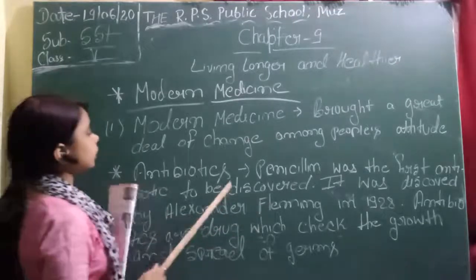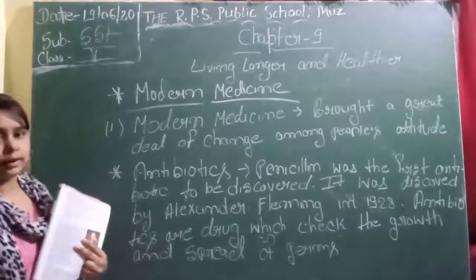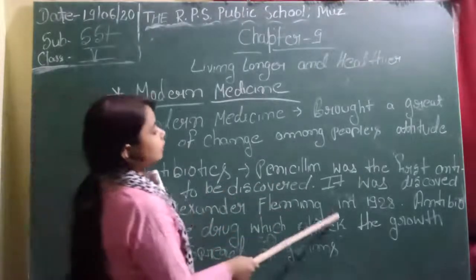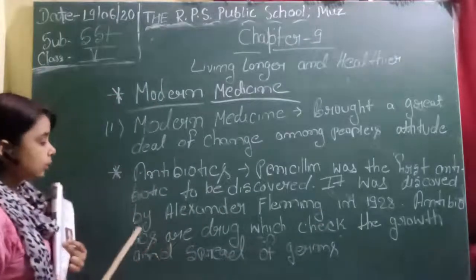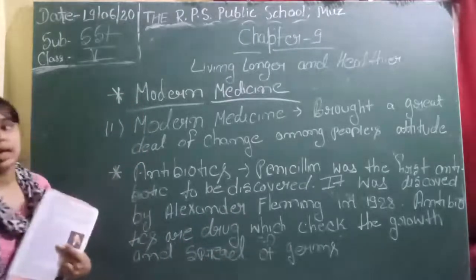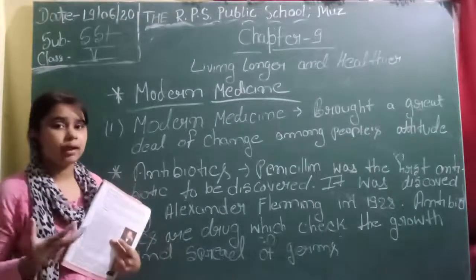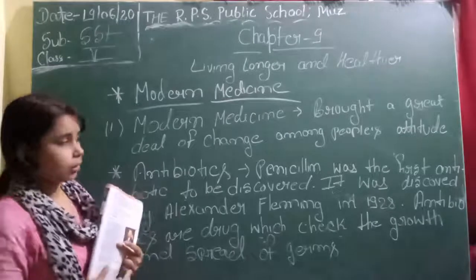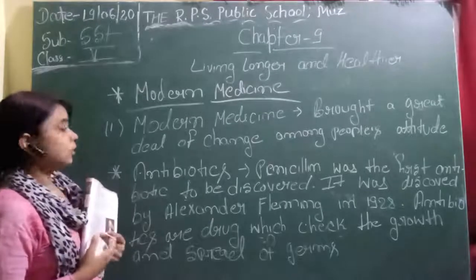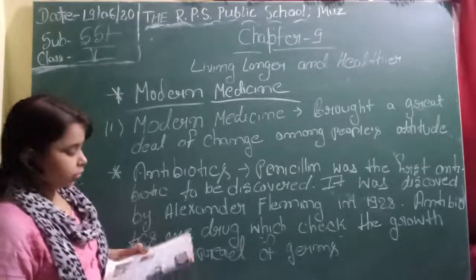The first antibiotic to be discovered was penicillin. It was discovered by Alexander Fleming in 1928. Antibiotics are drugs which check the growth and spread of germs. They check how much growth of germs and bacteria has occurred in our body. So the first antibiotic discovered was penicillin, discovered by Alexander Fleming in 1928.